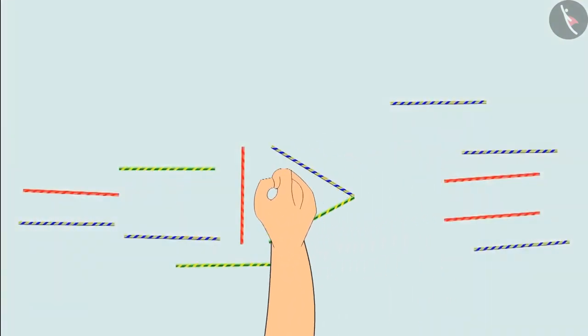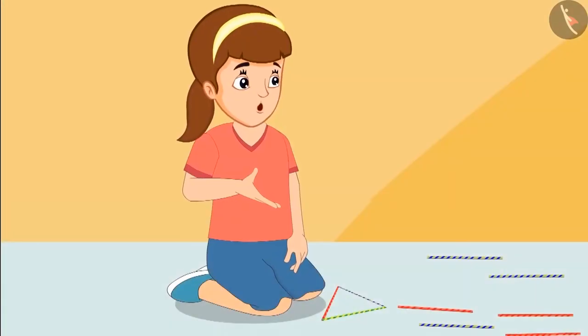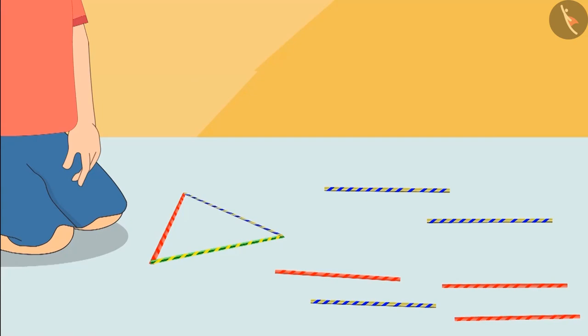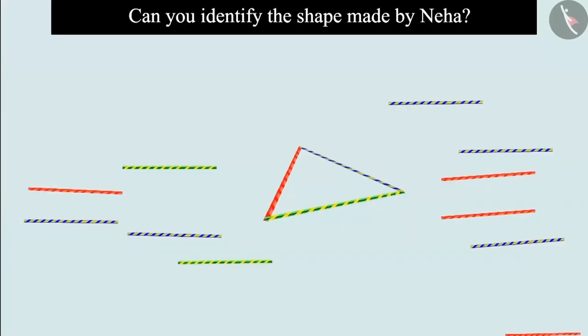Neha, what are you making? Chotu, I have made a shape out of three straws. Can you identify the shape I made? Children, do you know which shape Neha has made? Come on, let's see.